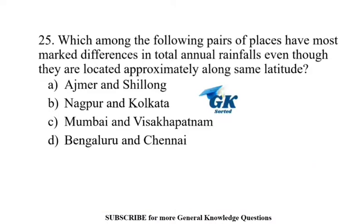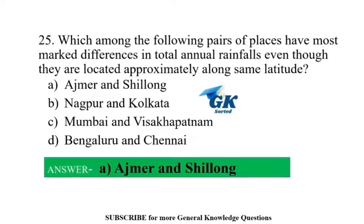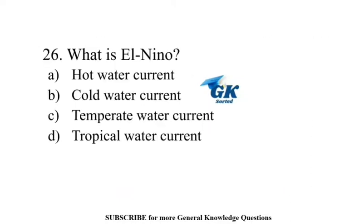Which among the following pairs of places have the most marked differences in total annual rainfall, even though they are located approximately along the same latitude? Ajmer and Shillong.